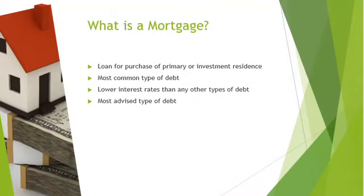A mortgage — I wanted to define it for those of us who don't fully understand what it is. Obviously, it's a loan given by a bank for a person to purchase either a primary residence or a residence for an investment. You'll either have a fixed mortgage rate or a floating, basically variable, interest rate.